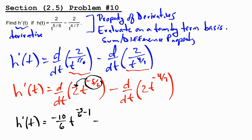Subtract, and when we take negative 4-7 and multiply it by the coefficient, we get negative 8-7 t to the negative 4 over 7 minus 1.